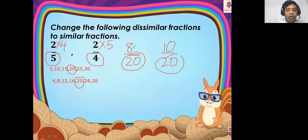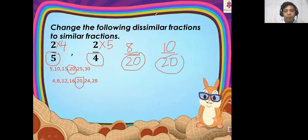They have common denominators. So, eight twenty-fourths and ten twenty-fourths. Hope you get it. Let's proceed.